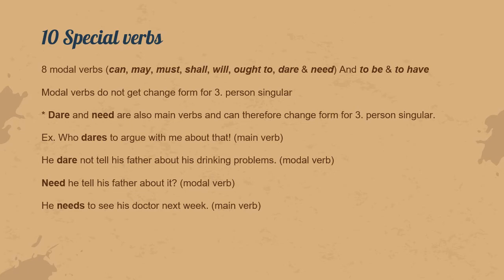The other two are 'to be' and 'to have'. Modal verbs do not change their form for third-person singular and just stay the same, but 'dare' and 'need' are also main verbs, which means that when they are used as main verbs, they do get an -s or change their form.